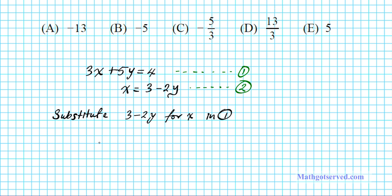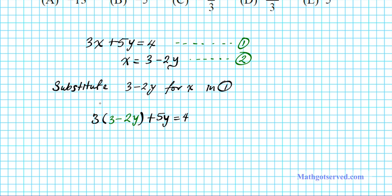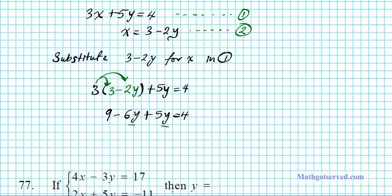Let's go ahead and make the substitution. We replace x with the value from equation 2, which is (3 minus 2y), plus 5y equals 4. Now let's solve this resulting equation for y. First, resolve the parenthesis by distribution: distribute 3 to 3 and negative 2y, giving us 9 minus 6y plus 5y equals 4. Combining negative 6y plus 5y — since the signs are different, we subtract and keep the sign of the bigger one — we have 9 minus y equals 4.